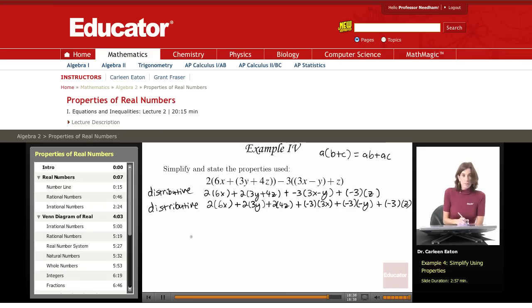Now I'm going to multiply these out. This is 12x plus 6y plus 8z minus 9x plus negative and a negative is a positive, so that gives me plus 3y minus negative 3z, so it's negative 3z.